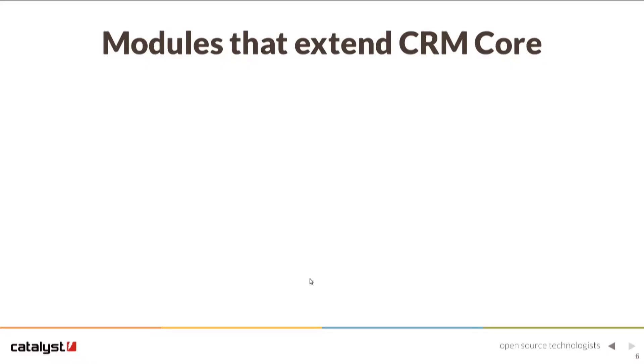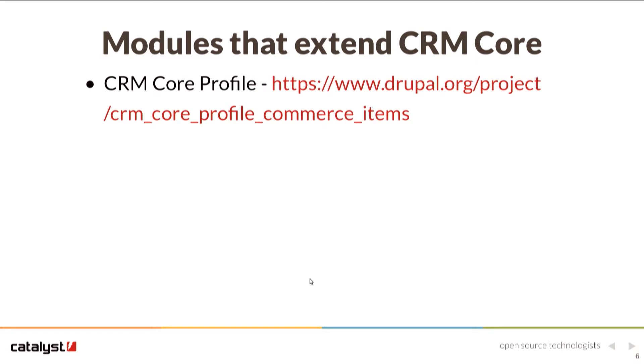There are a number of modules that extend CRM Core. CRM Core Profile is a form builder for CRM Core — from the user interface you can create a form to gather first name, last name, and email from a person. When someone submits that profile form, they don't even need to be registered on the site or have a user account. They can just submit a form saying they want to volunteer for something, and at the same time a contact record and an activity record are created. It's good not only for developers but for site builders who can create forms without any code.